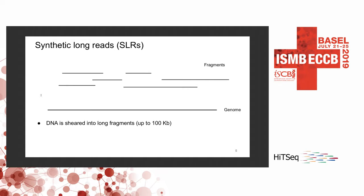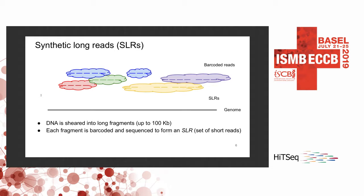What are synthetic long reads? All synthetic long read generation protocols follow a similar pipeline. First, the input DNA is sheared into long fragments. Then each fragment is distributed among multiple containers, the material inside the container is amplified, sheared into shorter subfragments, barcoded, and pooled together for sequencing. In the end, we obtain a set of barcoded reads, and the barcode indicates the container from which the read came. A collection of reads that originated from the same genome fragment is called a synthetic long read. The color of the read represents the barcode, and the cloud figure is an SLR.